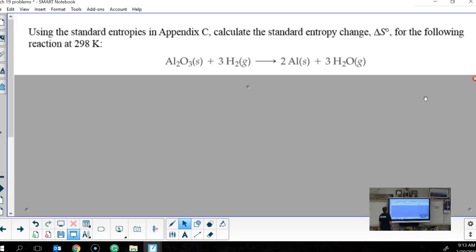Using the standard entropies in Appendix C, calculate the standard entropy change, or Delta S naught, for the following reaction at 298. If you need a value, I would give it to you. It's like the last test where it's in a box.